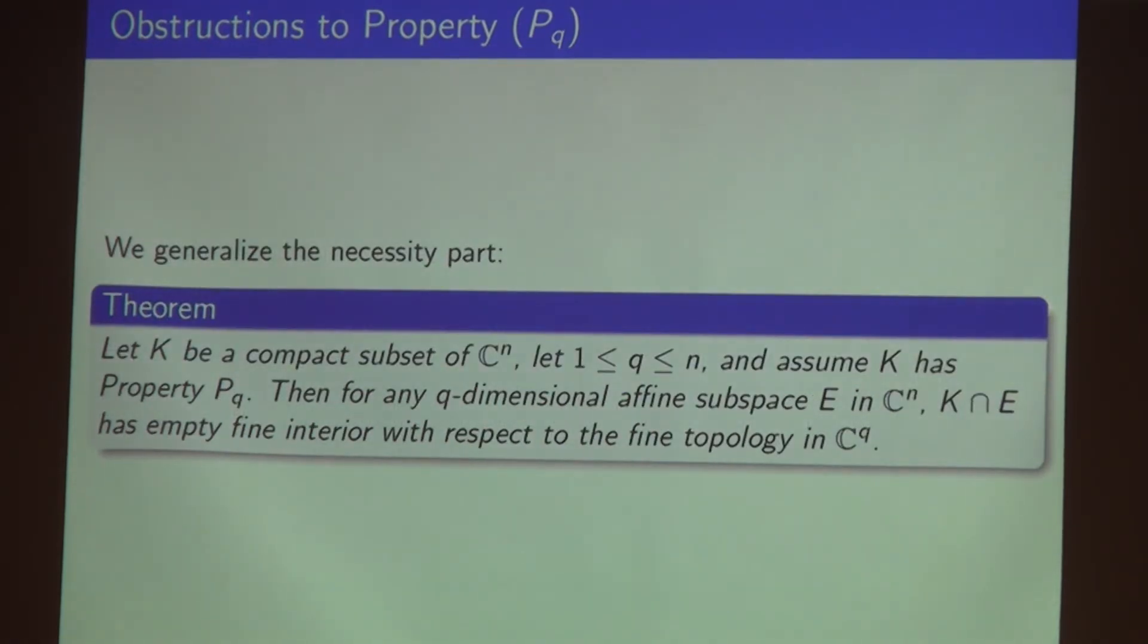Our result is for the necessary part: when you assume the compact subset K has property P_Q, then if you take any q-dimensional affine subspace E and you take the intersection with this compact set K, this intersection set will have empty fine interior with respect to the fine topology in C^q. If you take q equal to 1 and n equal to 1, that agrees with the necessary part of Sibony's theorem. If you take q equal to n, then the same thing happens.